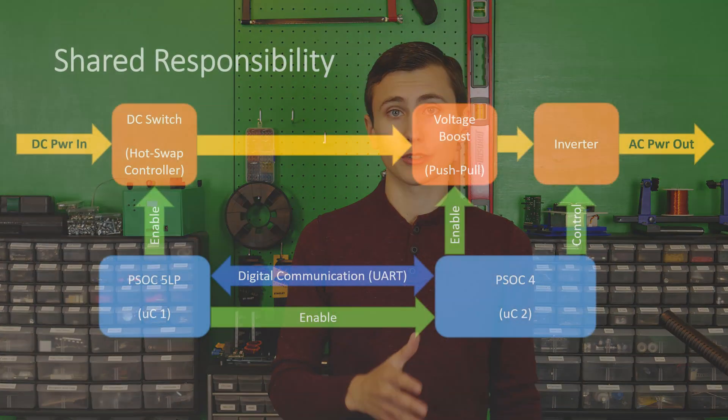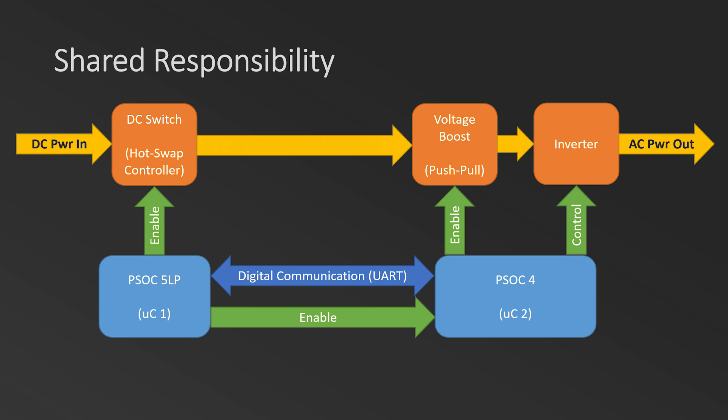If our system is already designed to have two processors that monitor the state of everything, this makes it relatively easy to implement shared responsibility as well, which is the next piece of fault tolerance. Shared responsibility can take many forms, but in general this means that both processors need to agree that it's safe and the right time to do something before it happens. In the case of RUPS, in order for the inverter output to turn on, the main processor must first turn on the hot swap controller. Once this is turned on, the second processor is able to turn on the boost converter, which goes from low voltage to high voltage, and the inverter output stage, which ultimately generates the sine wave. Therefore, in order for the sine wave to appear, both processors need to be actively enabling something in order for power to get out of the system.